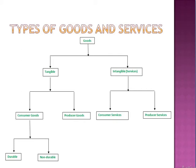Under consumer goods, we have certain goods that are durable, meaning long-lasting — they don't get broken or rotten easily. On the other hand, we have non-durable goods, which do not last for a long period of time.